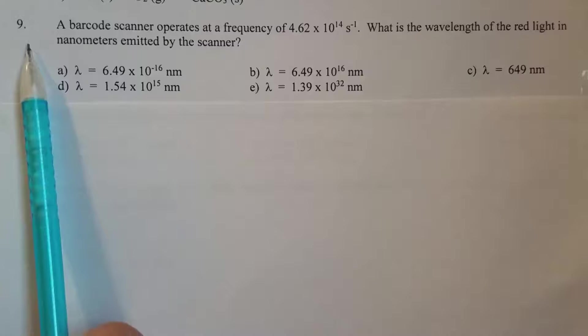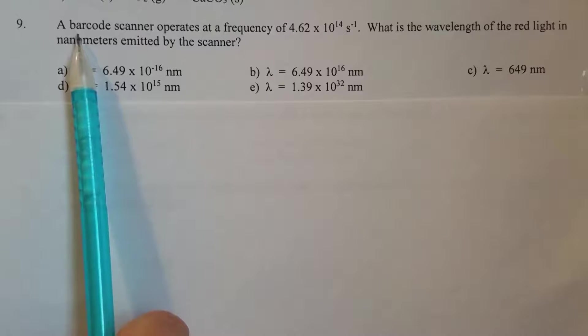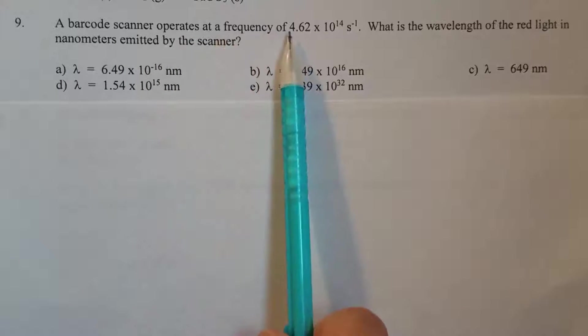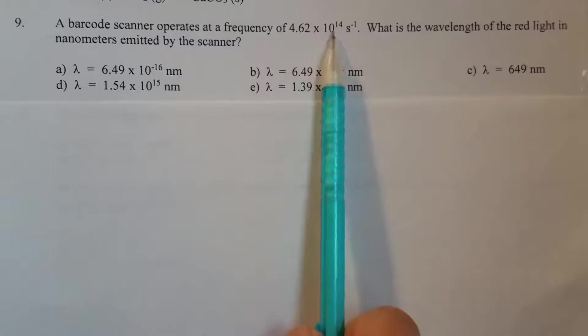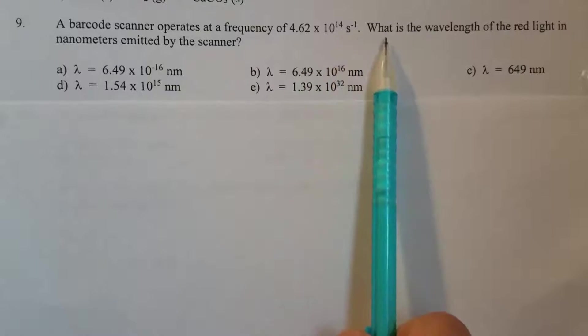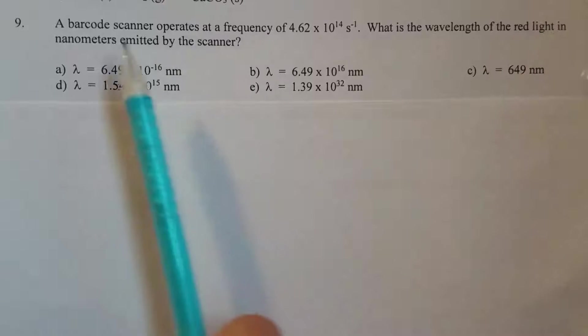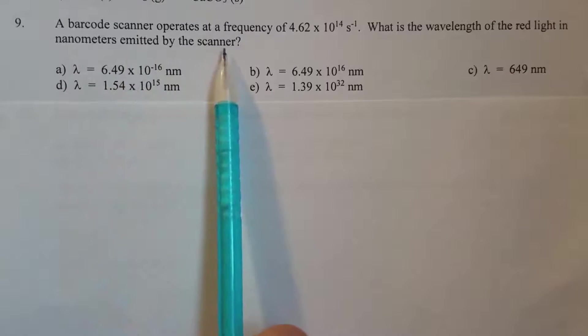This is practice exam 3, question number 9. A barcode scanner operates at a frequency of 4.62 times 10 to the 14th hertz. What is the wavelength of the red light in nanometers emitted by the scanner?